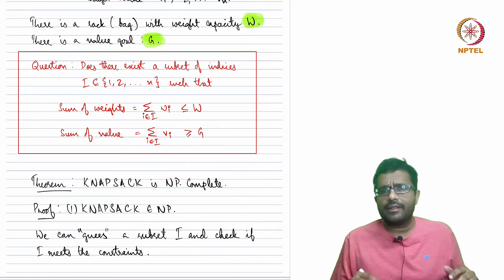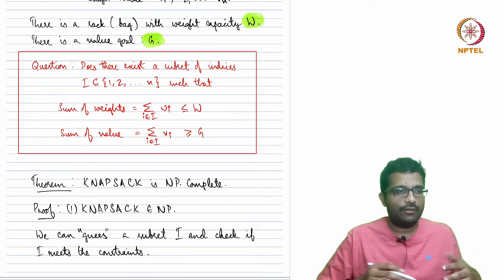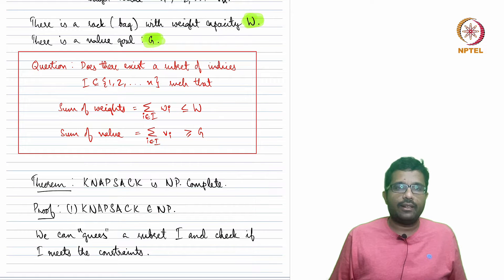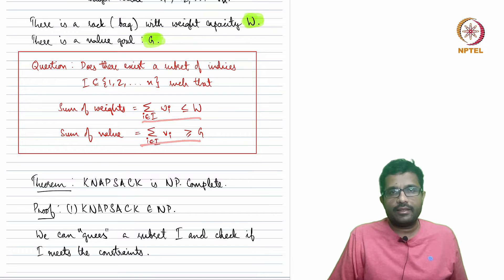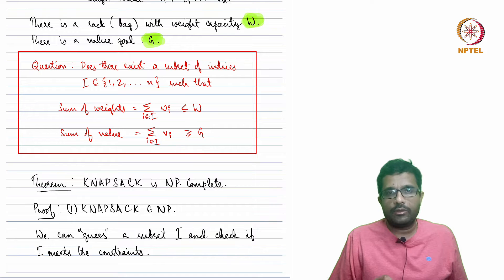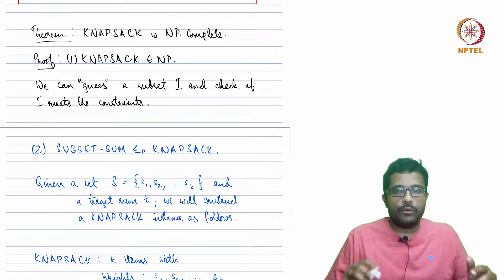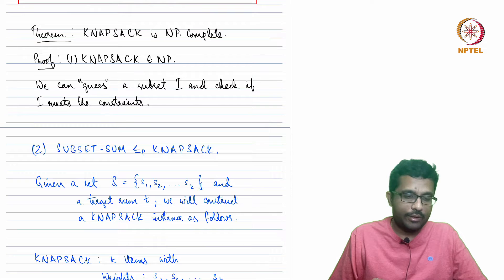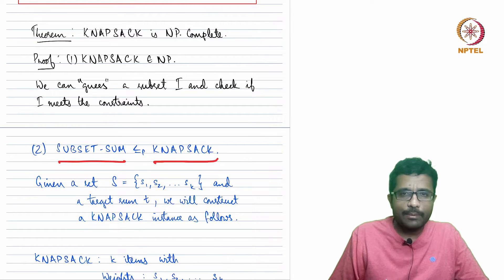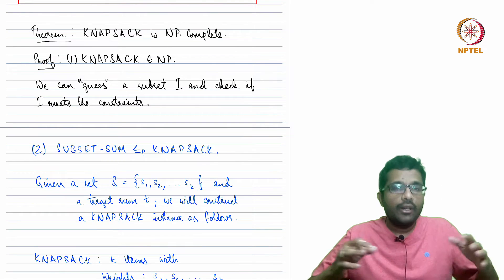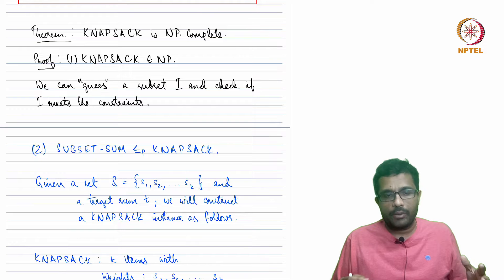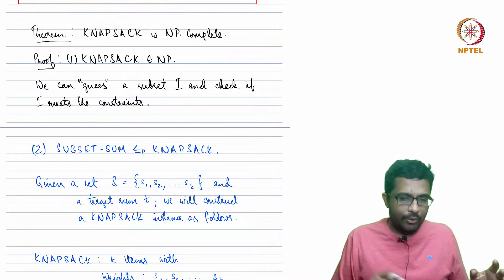First of all, Knapsack is in NP by the standard guess-and-verify approach: we can guess a subset by picking or not picking each element, then verify whether the subset satisfies the two constraints — sum of weights being at most the capacity and sum of values being at least the goal. To show NP-completeness, we also need to show that some NP-complete language reduces to this problem. We will reduce Subset Sum to Knapsack, which is not surprising since both problems involve choosing a subset of items satisfying a certain property.